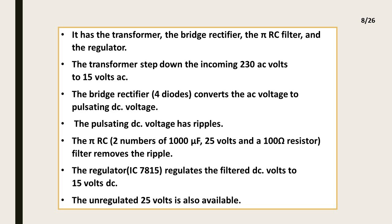The transformer steps down the incoming 230 AC volts to 15 volts AC. The bridge rectifier — 4 diodes — converts the AC voltage to pulsating DC voltage. The pulsating DC voltage has ripples. The pi RC filter, with two 1000 µF 25-volt capacitors and a 100 ohm resistor, removes the ripple. The regulator IC 7815 regulates the filtered DC volts to 15 volts DC.